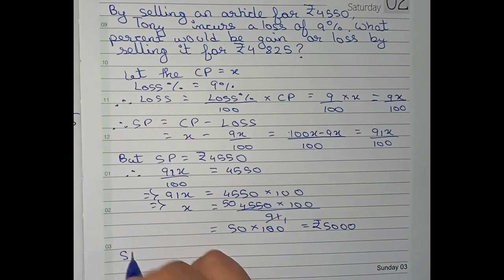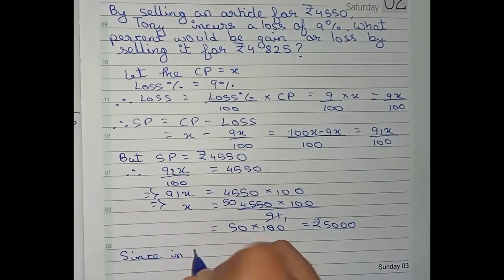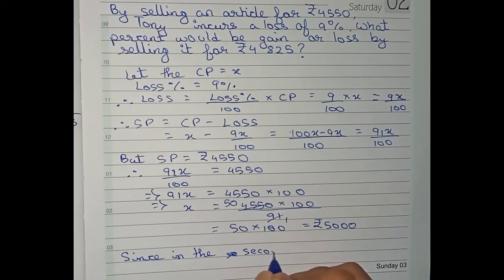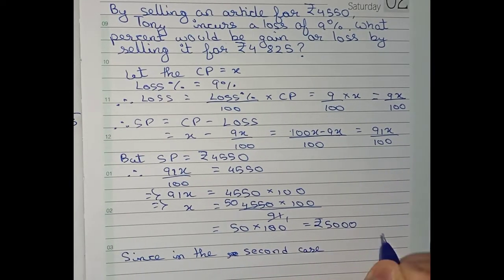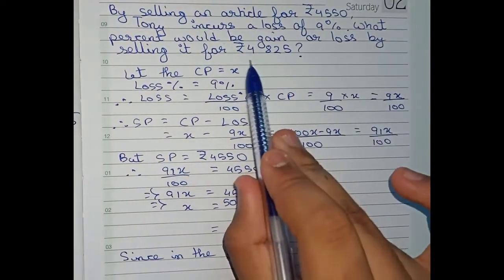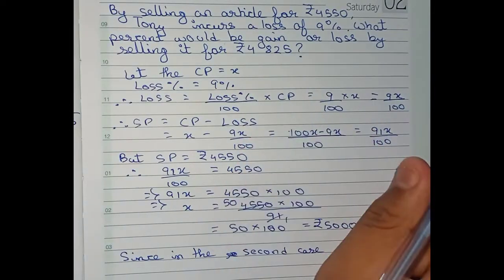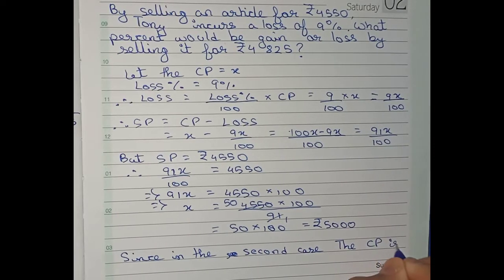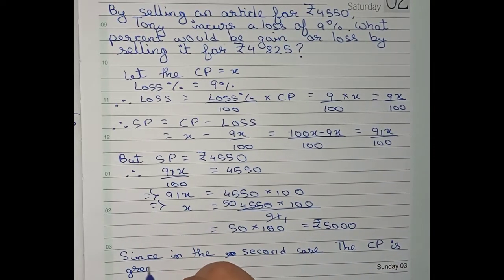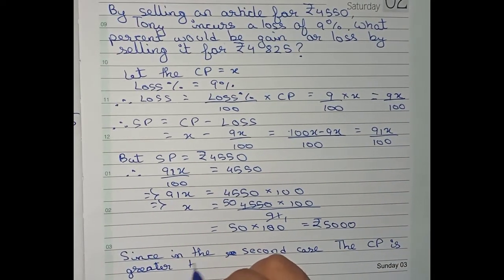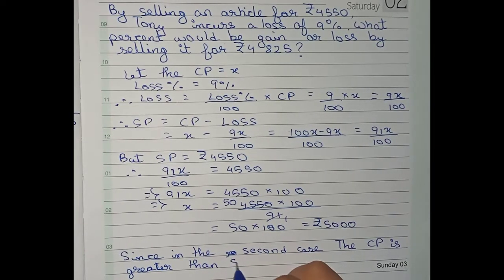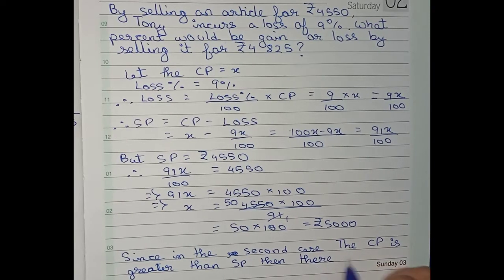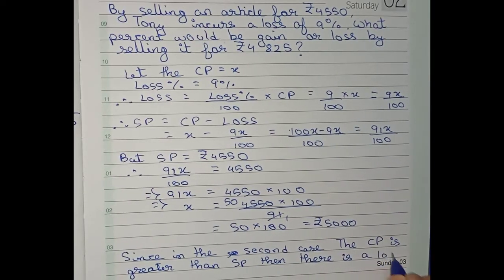Now since in the second case, that means in the case where it needs to solve for 4825, the CP is greater than SP, then there is a loss. That means there is again a loss.